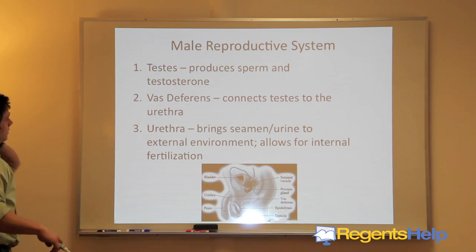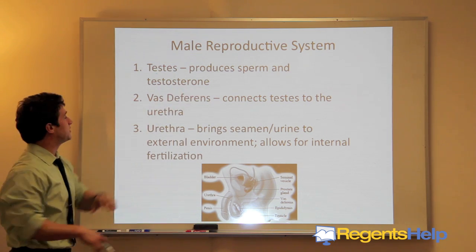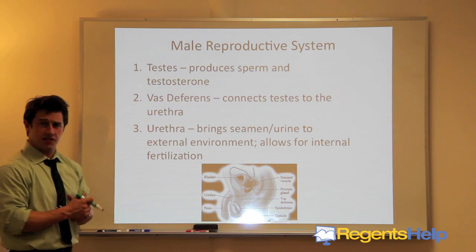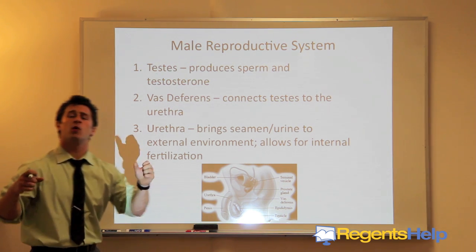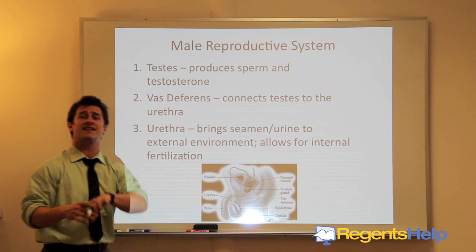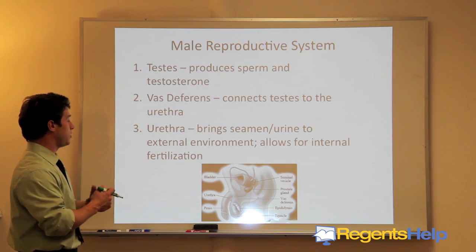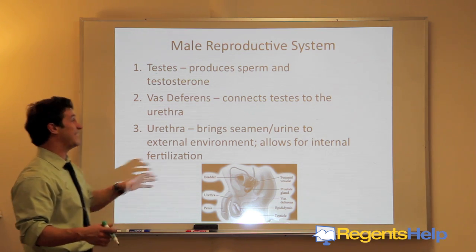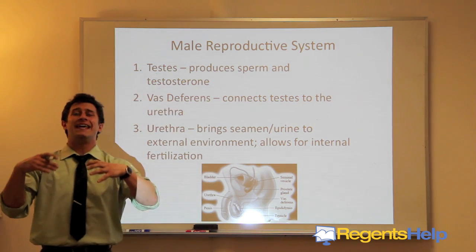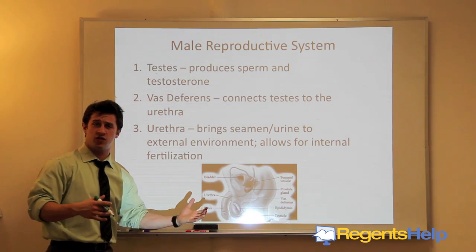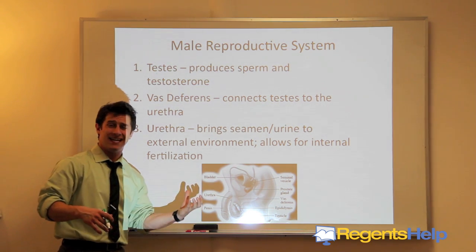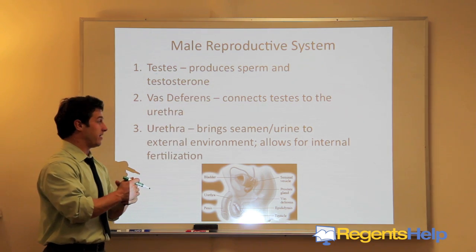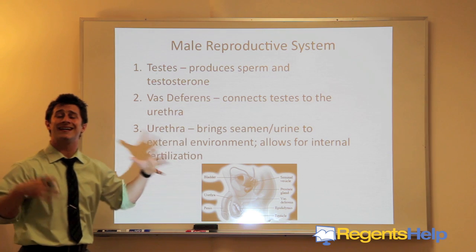In the male reproductive system, the testes produce sperm and testosterone. The vas deferens are connections from the testes to the urethra — this is how sperm travels from the testicles and is released into the external environment. The urethra brings semen and urine to the external environment through the penis and allows for internal fertilization in a female. When the penis is inserted into the vagina and sperm is deposited, it swims up to the fallopian tubes to meet the egg.